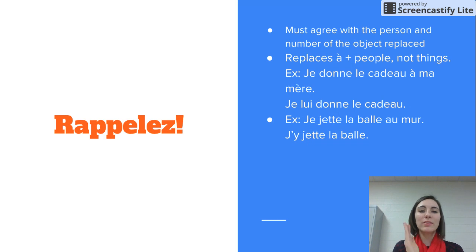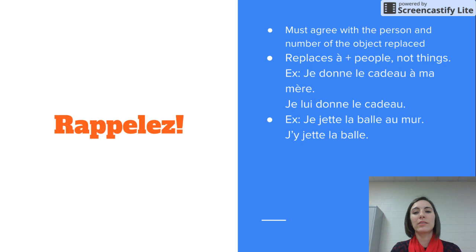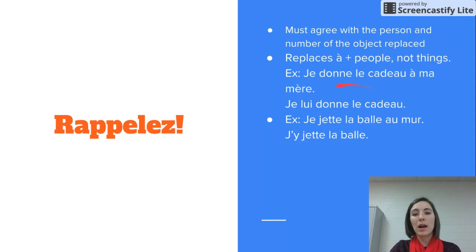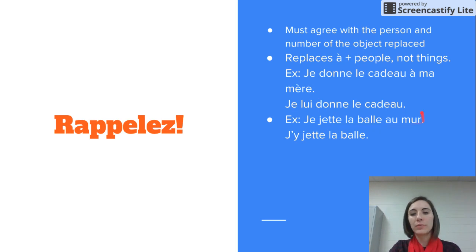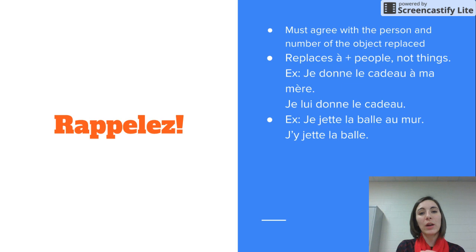Remember, you must make your object pronoun agree with the person and number of the indirect object replaced. Indirect object pronouns replace à plus people — never things. For example, je donne le cadeau à ma mère — à ma mère is a person, so we say je lui donne le cadeau. But for je jette la balle au mur, I throw the ball at the wall, you cannot use lui because the wall is a thing. You would just say je jette la balle. Indirect object pronouns can only replace people.